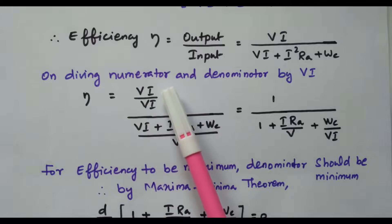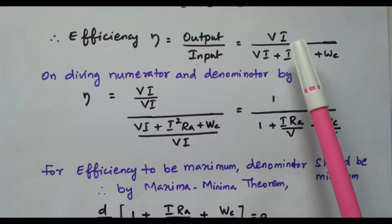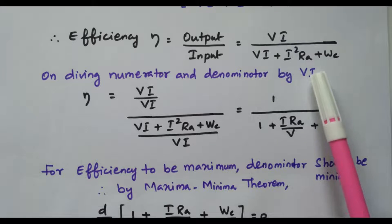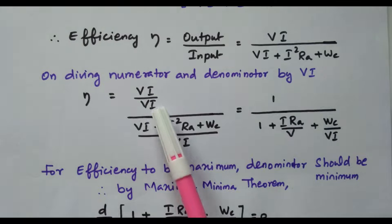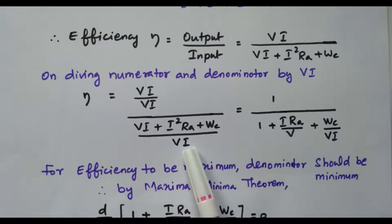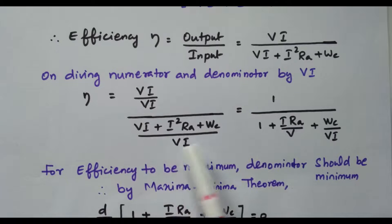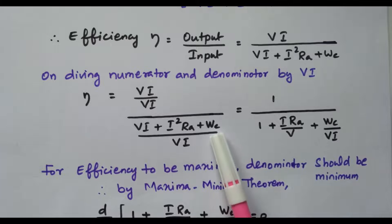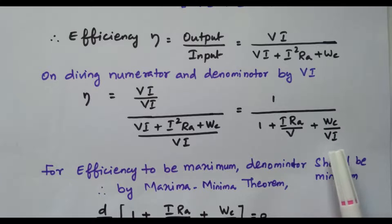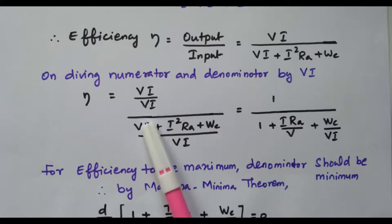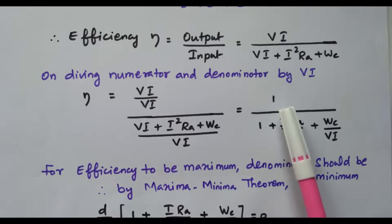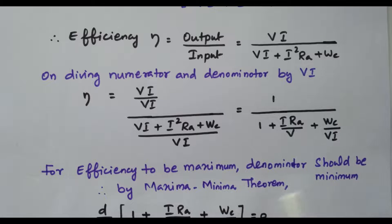By dividing both numerator and denominator by VI, we simplify without changing the value. VI/VI gives 1; I²RA/VI gives IRA/V; WC/VI remains WC/VI. So efficiency becomes: η = 1 / (1 + IRA/V + WC/VI). This is the simplified efficiency expression.